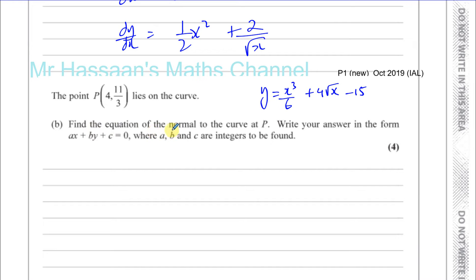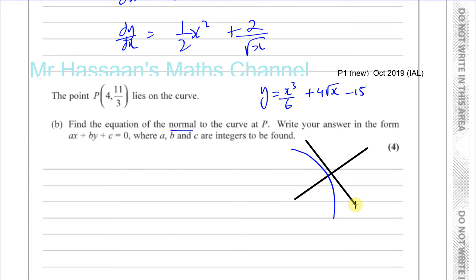We need to find the equation of the normal to the curve at P. The normal is a straight line, and the normal to a curve means it's perpendicular to the tangent of the curve. Just say that was the tangent to the curve — the tangent has the same gradient as the curve at the point where they meet. So the normal to the curve is a line which is perpendicular to the tangent.